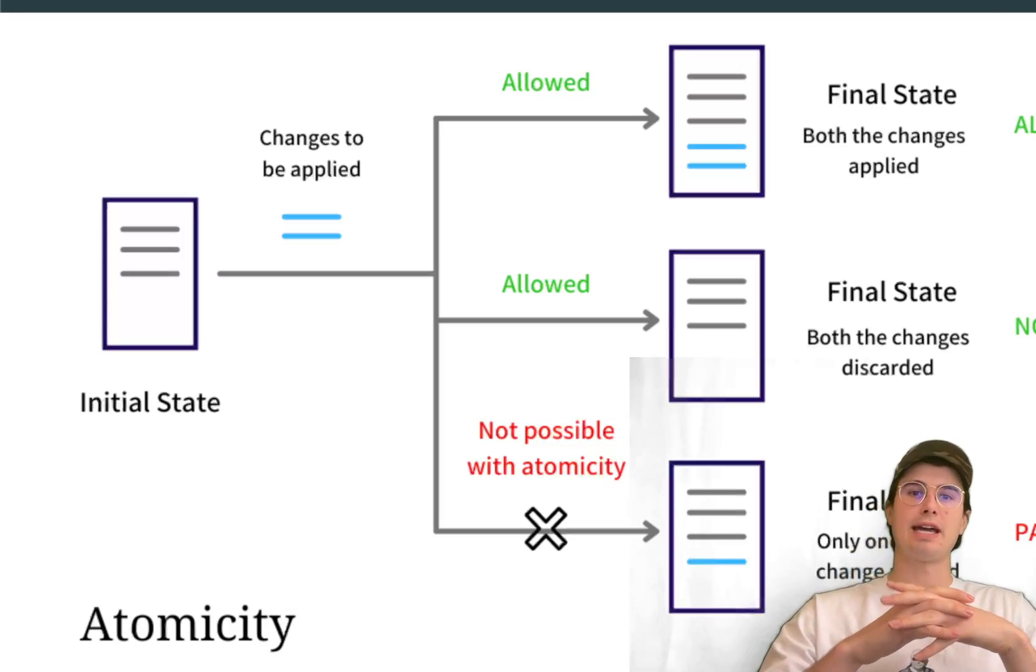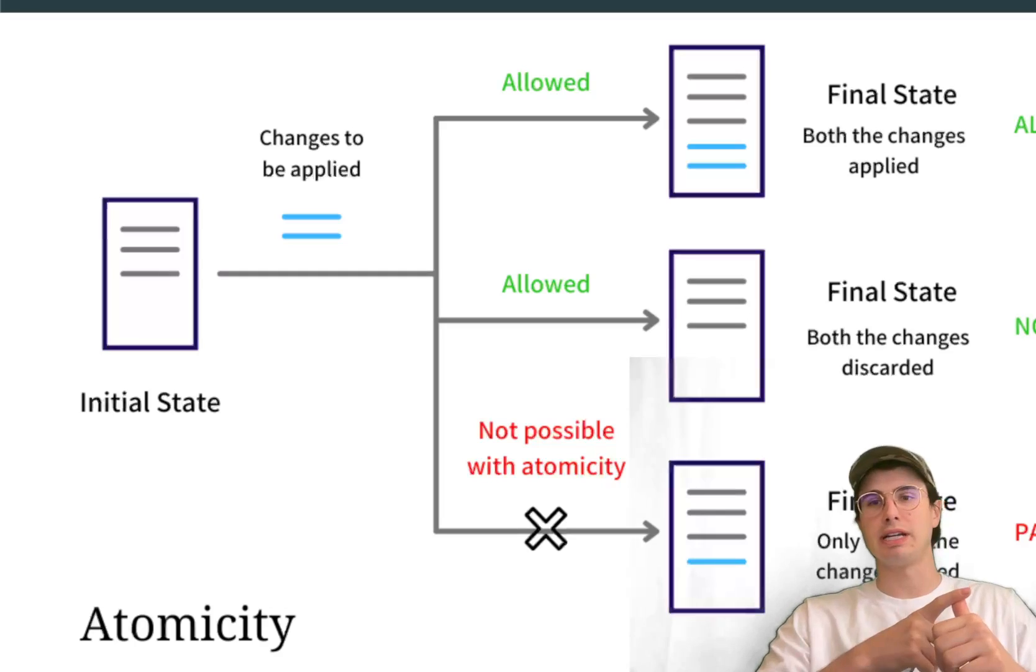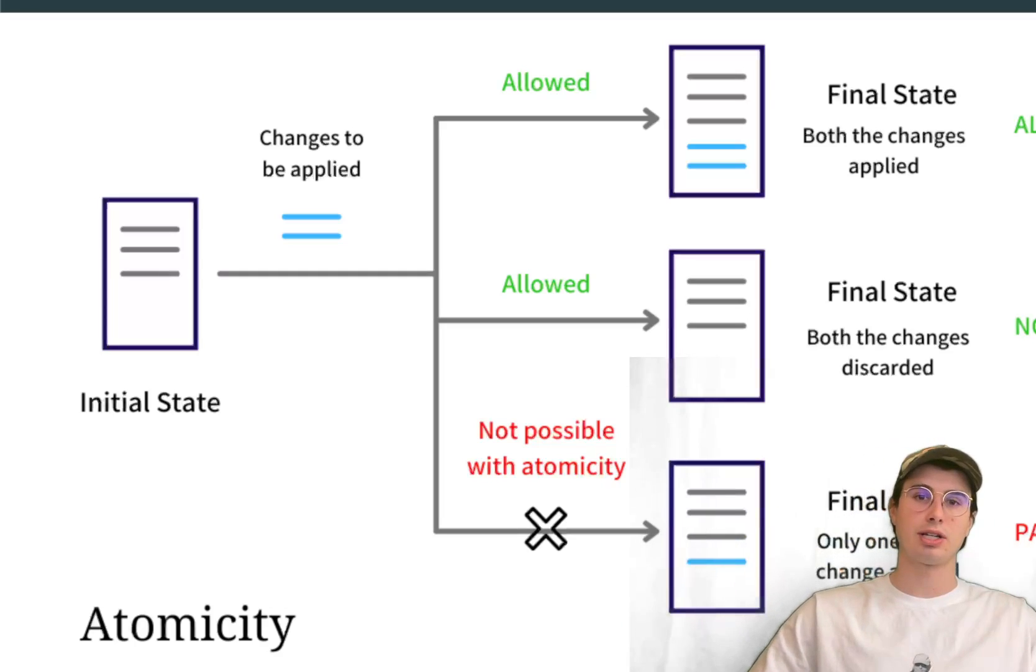And then finally, kind of in tandem with that is complexity in distributed systems. So maintaining ACID properties across distributed systems can be pretty complex and resource intensive because there's a need for coordination and also synchronization across all those nodes that are maintaining your database. So that can be difficult to maintain if you're running a distributed database type setup.